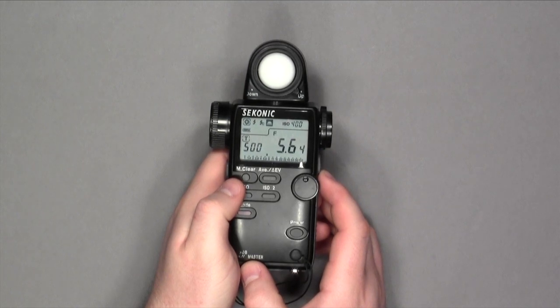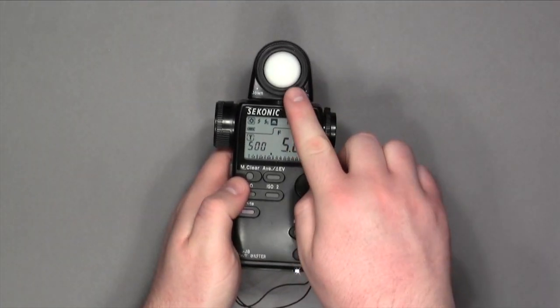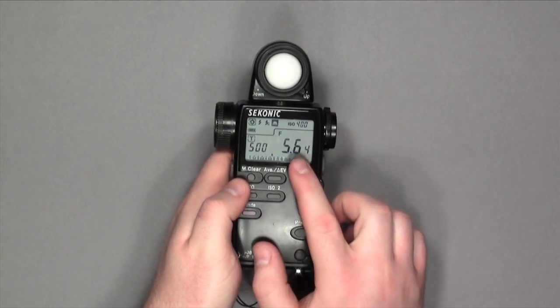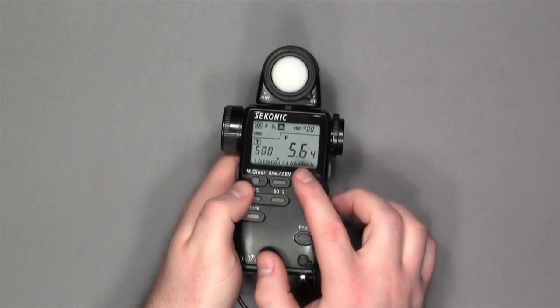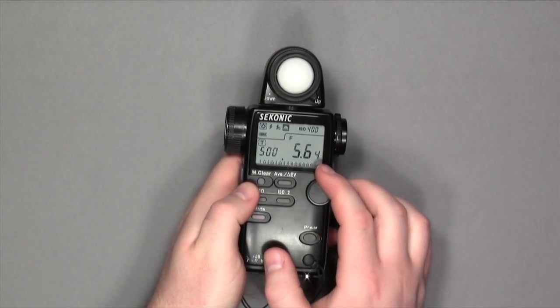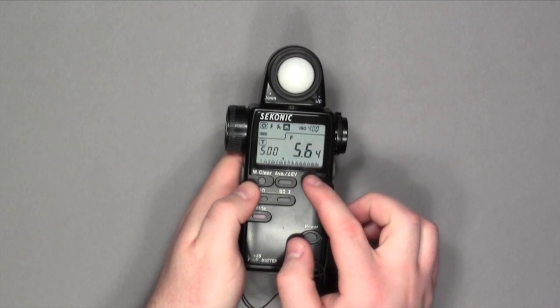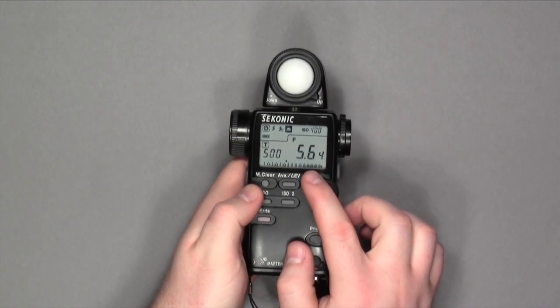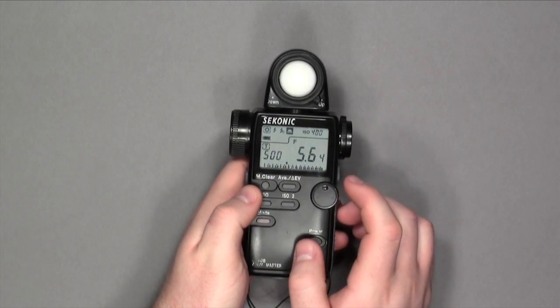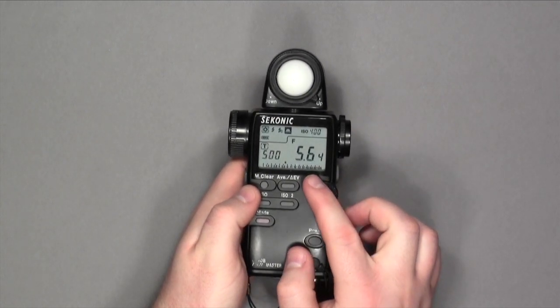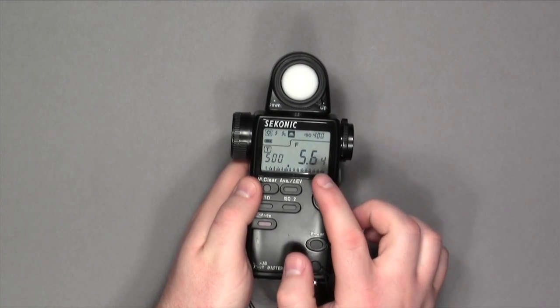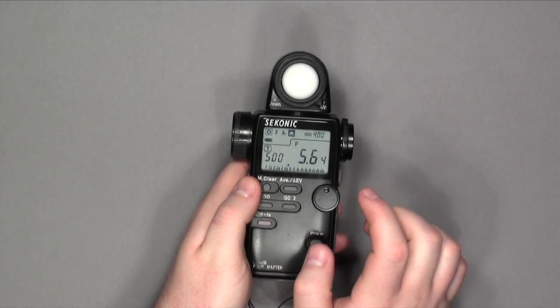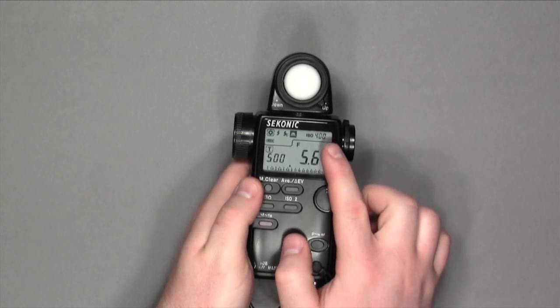This is telling us the correct exposure for direct sunlight onto this Lumisphere is 500th of a second at f5.6.4, which is almost 5.6.5, which could be rounded down to the next third. The third below 5.6, as we know, is 5. So the closest exposure your camera could get to the exact exposure of direct sunlight onto this sensor is 500th of a second at f5, with your ISO being 400.